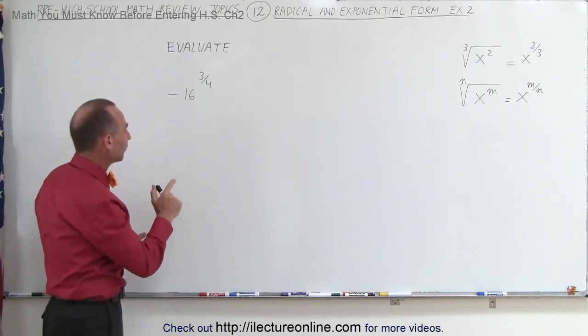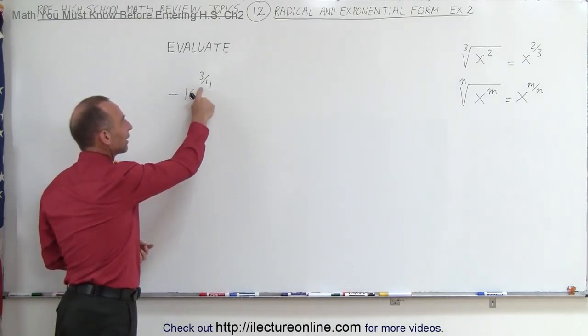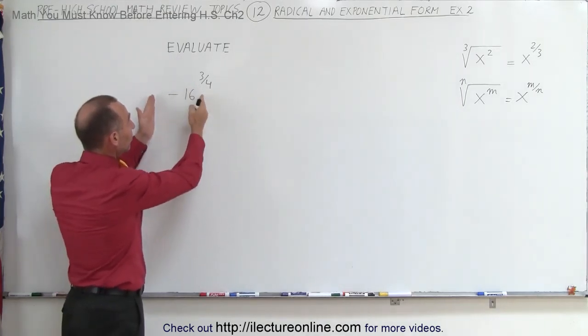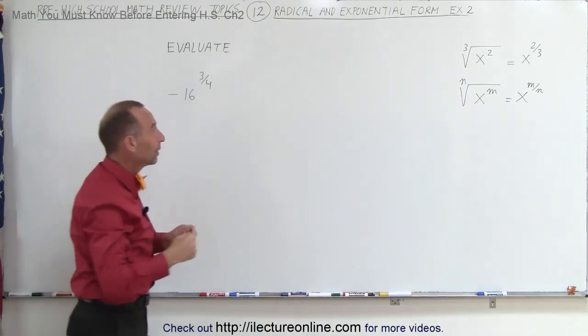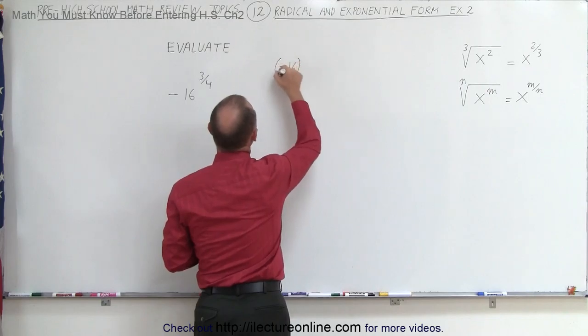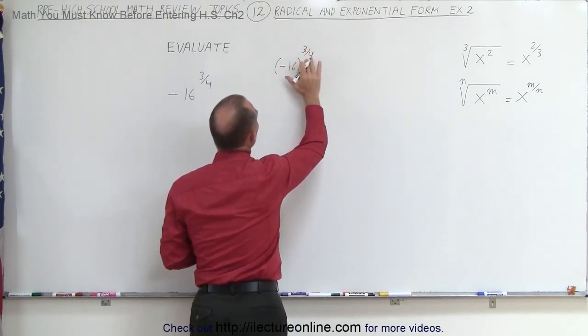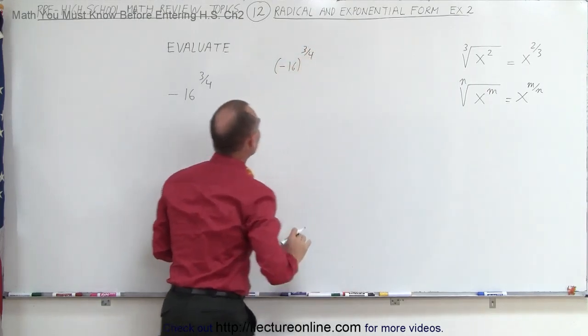But before we get started, we have to be careful and realize that the negative sign is not affected by the exponent because there's no parentheses around it like this. If we had written it like this instead, minus 16 in parentheses raised to the 3 fourths power, now the negative sign would be affected by the exponent. But in this case, it's only affecting the 16.